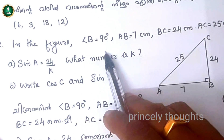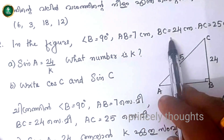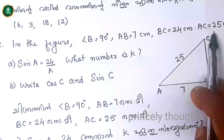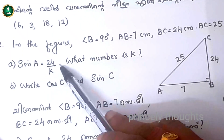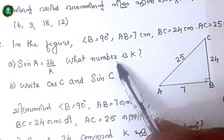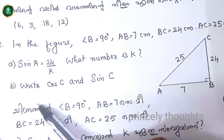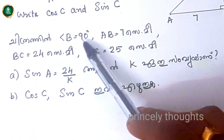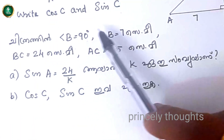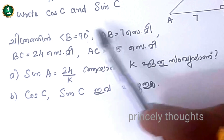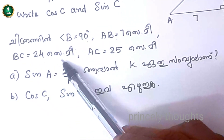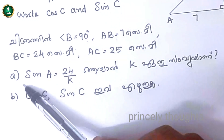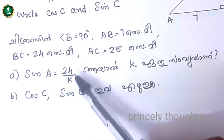In the figure, angle B is equal to 90 degrees. AB is equal to 7 cm, BC is equal to 24 cm, and AC is equal to 25 cm. Part a: sin A is equal to 24 by k — what number is k? Part b: write cos C and sin C.